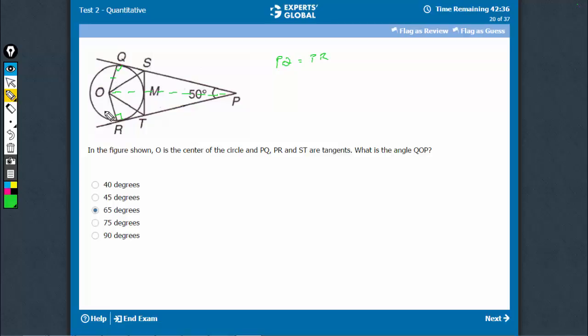These are two radii, so they have to be equal. And then these two triangles, these two angles are equal, and therefore these two triangles, OQP and OPR, are congruent.